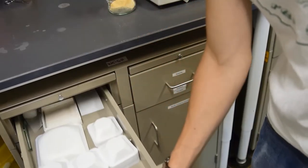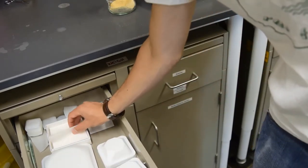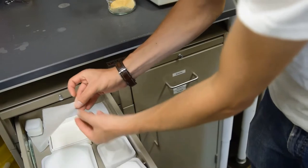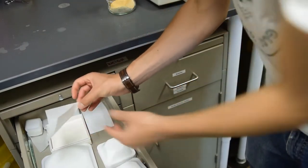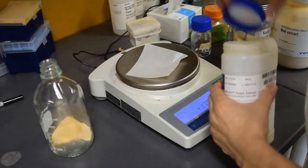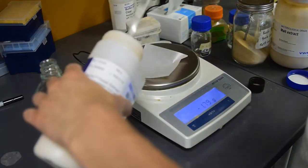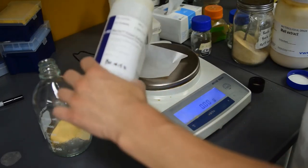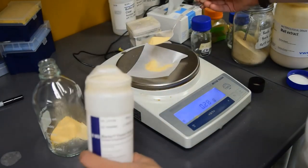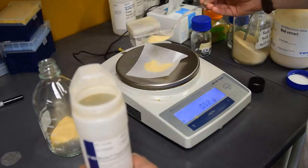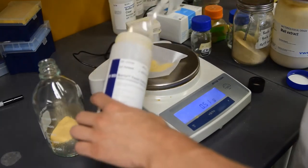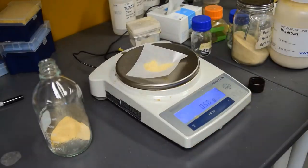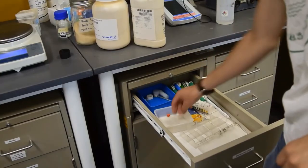Now for the yeast extract, we are going to use a weighing paper because it is a smaller amount. I like to pinch the corner to make it easier to handle. Remember to tare your scale. It's okay to put a little bit back in the container, especially if you're using a clean weighing dish or paper.